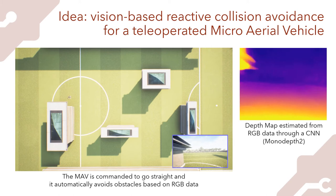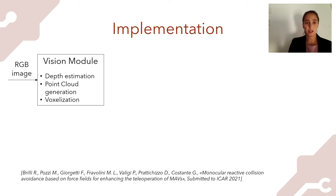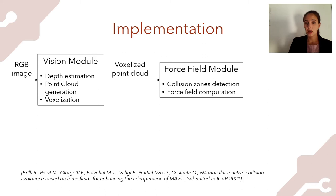Let us see more details about the system. We have a vision module that takes as input an RGB image and performs depth estimation, point cloud generation, and voxelization. The voxelized point cloud is then fed into the force field module, which performs collision zone detection and force field computation.